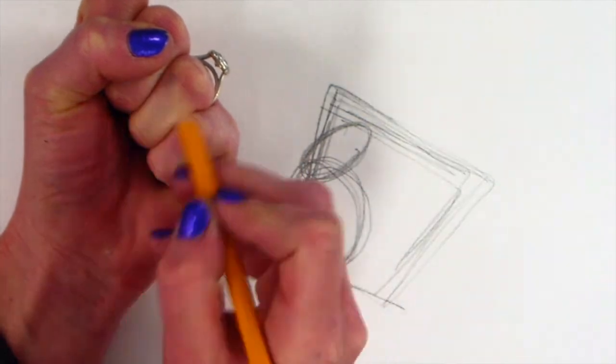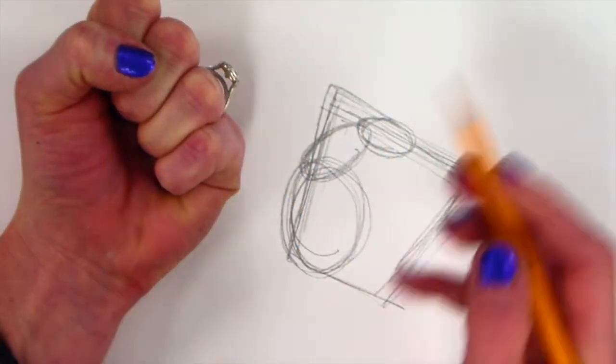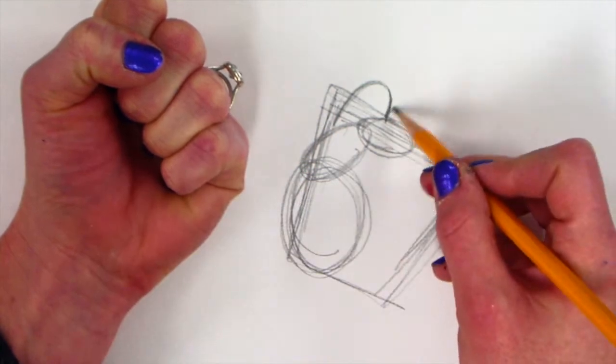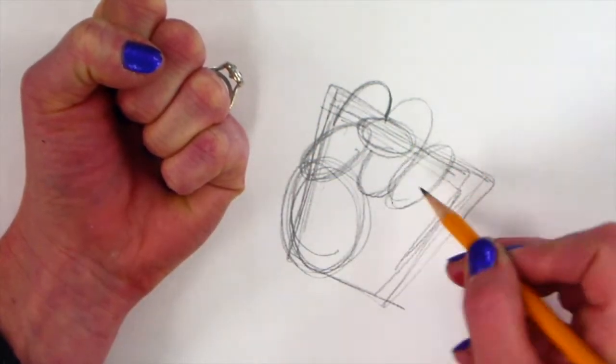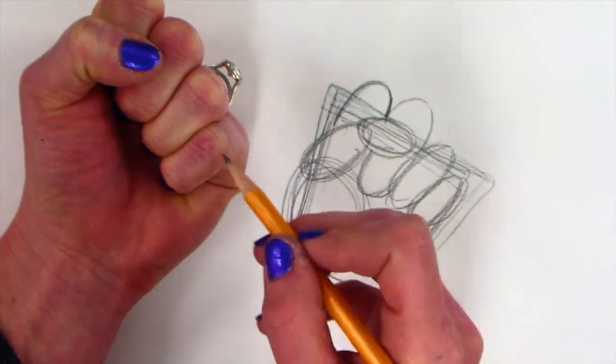Then I draw all of the additional joints as ovals following the direction in which they go. Up and down, side to side, left to right.